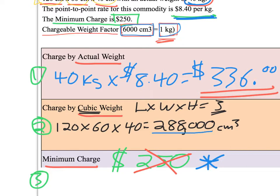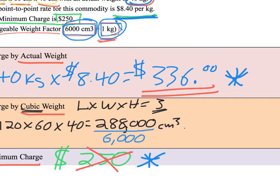We've cubed our shipment to 288,000 cubic centimeters. We divide that by 6,000 — because for every 6,000 cubic centimeters the carrier expects one kilogram. So 288,000 ÷ 6,000 = 48. That means the carrier is billing this shipment as if it is 48 kilograms.